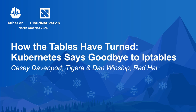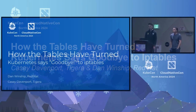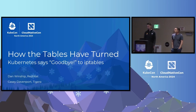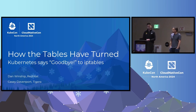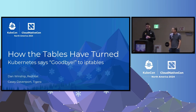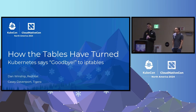Welcome everybody. My name is Casey Davenport. I'm an engineer at Tigera working on Calico. My name is Dan Winship, I'm an engineer at Red Hat working on OpenShift networking. We're here to talk about how the tables have turned, specifically our journey moving Kubernetes and Calico from iptables to nftables.